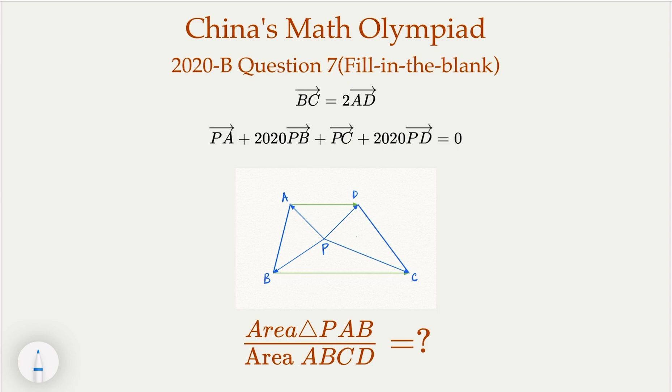This is China's Math Olympiad 2020, question 7, fill in the blank, which usually is a shorter problem. Now, in this trapezoid, we have BC equal twice of AD, and they're in the same direction. Notice that this is a vector.